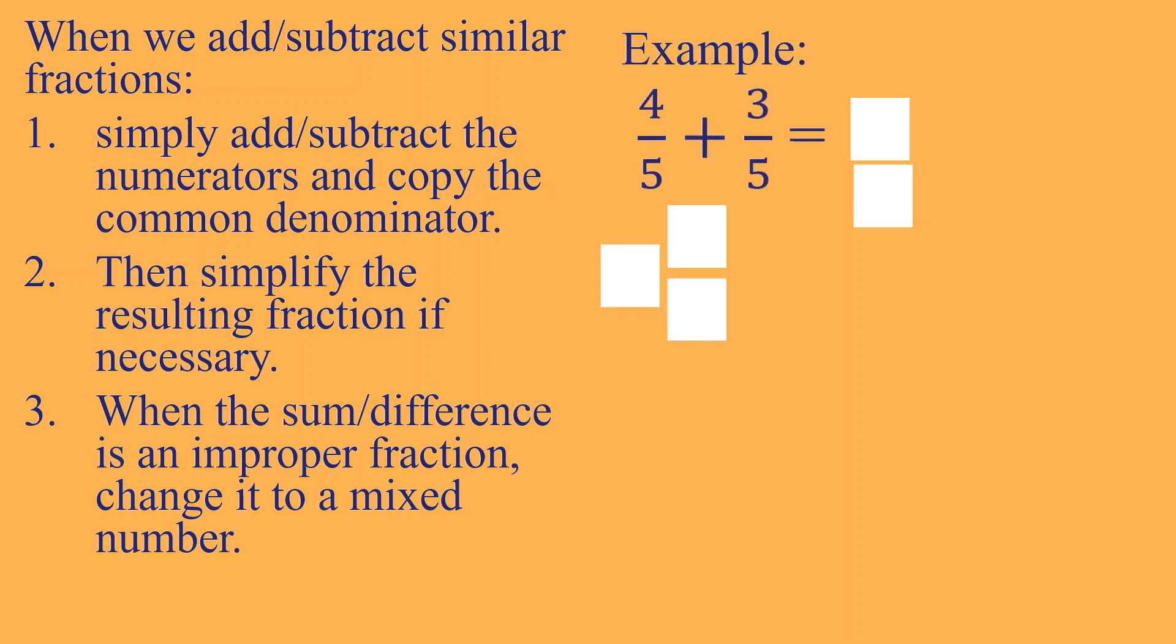Another example, we have 4 fifths plus 3 fifths. So, ganun pa rin. Dahil sila ay similar, we will add the numerator. 4 plus 3 is equal to 7. And then, copy the denominator, 5. So, kung titignan natin, simplify na siya. Kasi wala nang pwedeng pang-divide sa 7 at saka 5. Tama? But, tignan natin yung number 3 dito sa ating procedure kanina. When the sum or difference is an improper fraction, change it to mixed number.